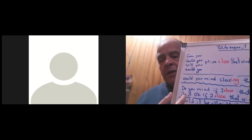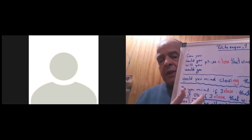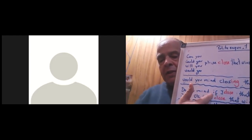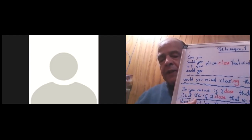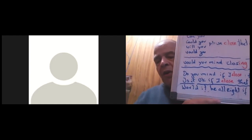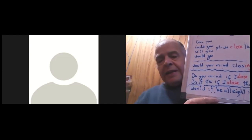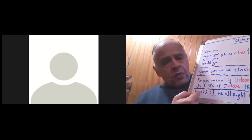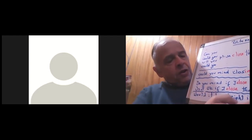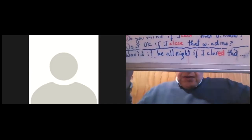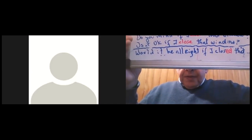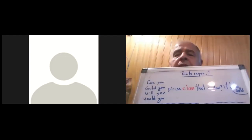Another possibility is using a clause like 'Is it okay if I close the window?' In that case, in the present, you use the verb in the infinitive. The last way uses a second conditional clause: 'Would it be alright if I closed that window?' — here you use the verb in the past. So those are all the possibilities to ask for something in a polite way.